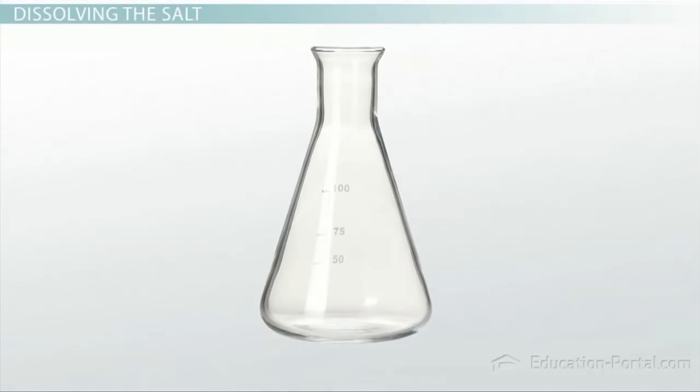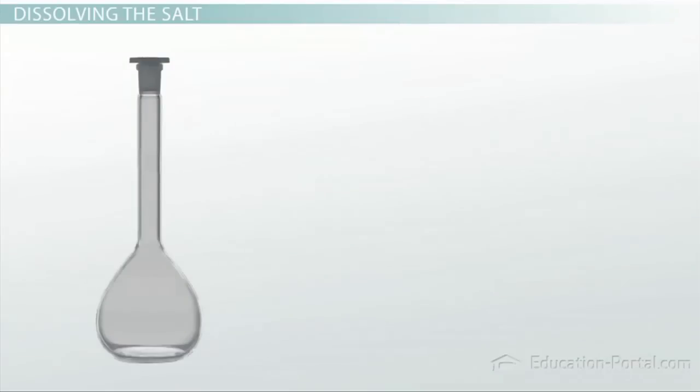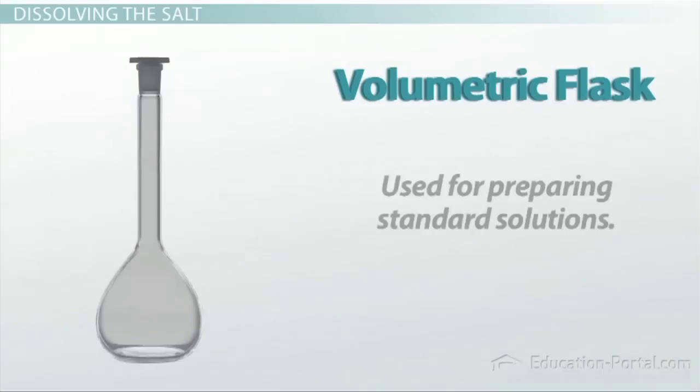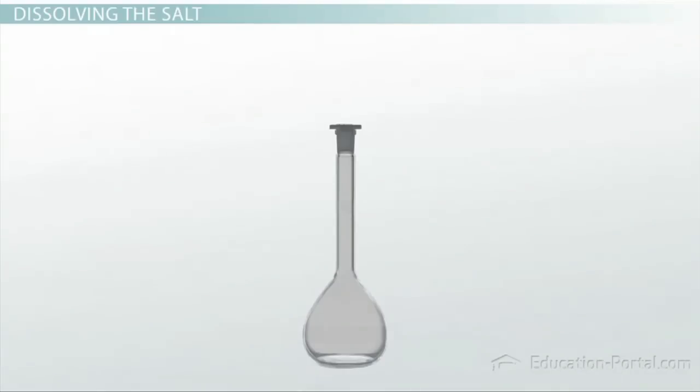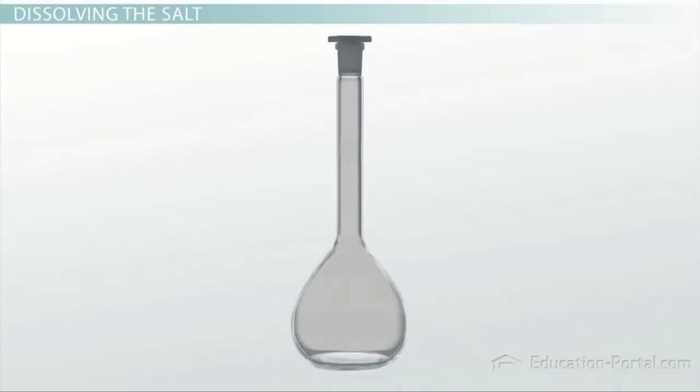Okay, now our salt is completely dissolved in the water we added, but we would like to make a 500 milliliter solution. The best piece of glassware for this job is the volumetric flask, which is used for preparing standard solutions. The bottom is great for dissolving or mixing liquids, and the narrow neck is perfect for the precise measurement of a liquid. We start out by pouring our concentrated salt solution from the Erlenmeyer flask into the 500 milliliter volumetric flask, and then filling it up to the line on the neck. What we have created is a 2 molar salt solution. We'll get to molarity in a later lesson.